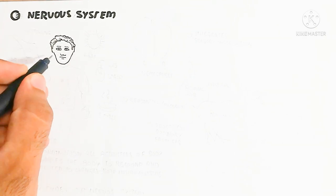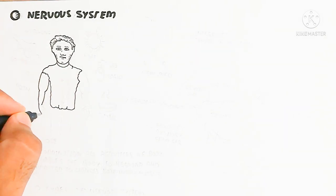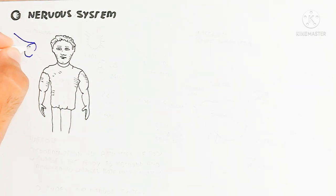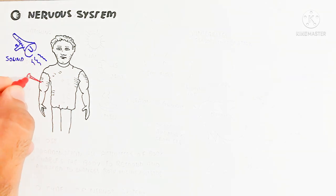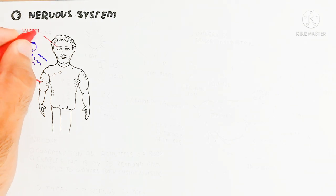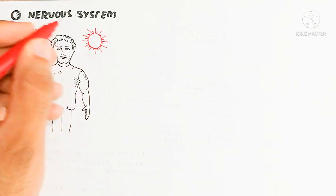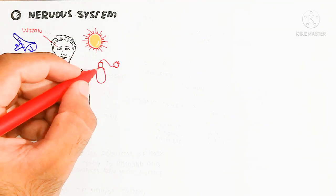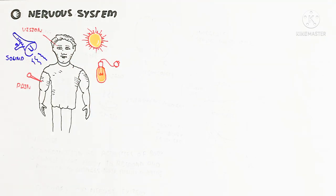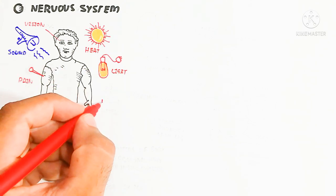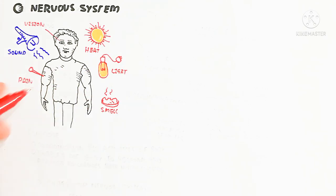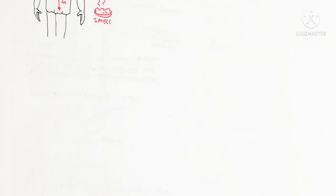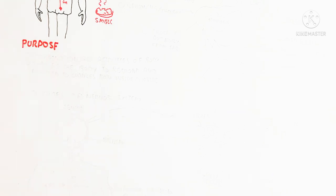Hello, in this video we will look at the nervous system. Basically we will discuss the overview of the nervous system, and the next video will cover different parts, pain receptors, motor pathways, and pain pathways. The nervous system is basically used for the coordination of all activities of the body — sound, pain, heat, light, smell, and vision — coordinating with these factors for detection. It is also used for balance.